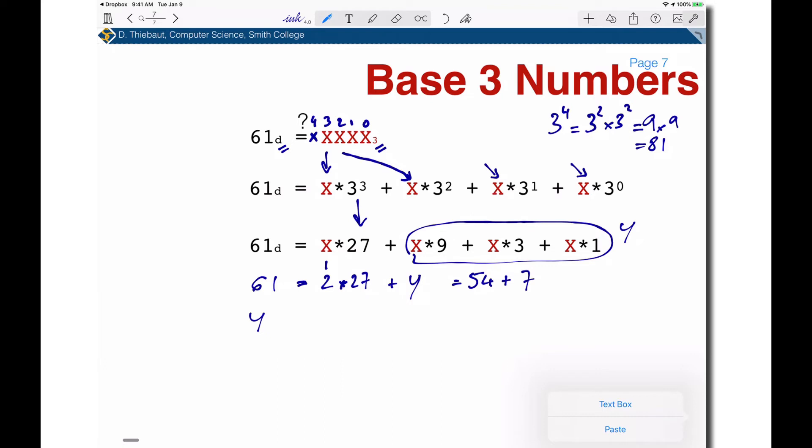How many times does 9 go into 7? Zero times, so the next digit is 0. How many times does 3 go into 7? Two times, since 2×3 = 6, leaving 1. So 61₁₀ = 2×27 + 0×9 + 2×3 + 1×1 = 2021₃. I hope that makes sense.